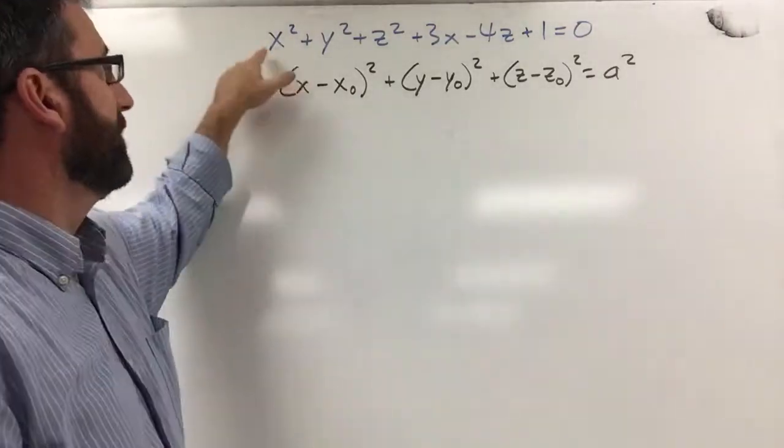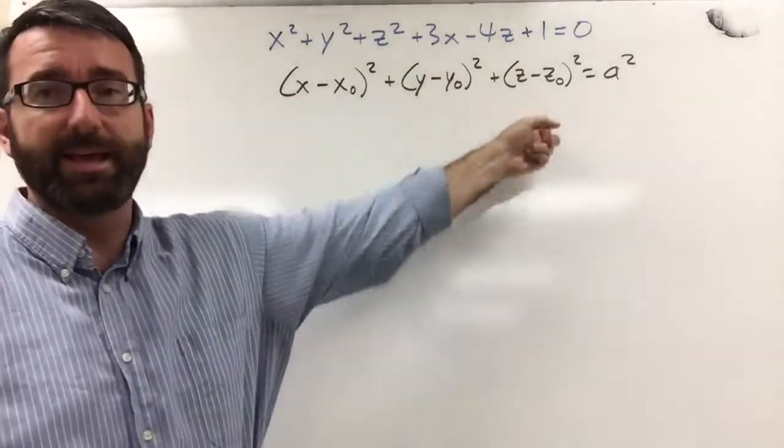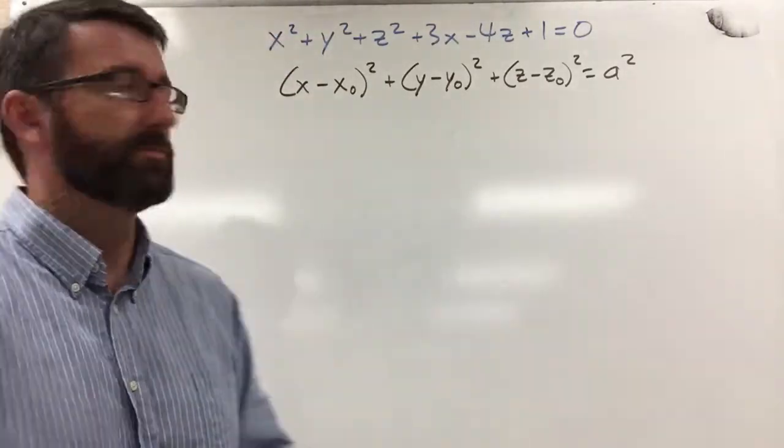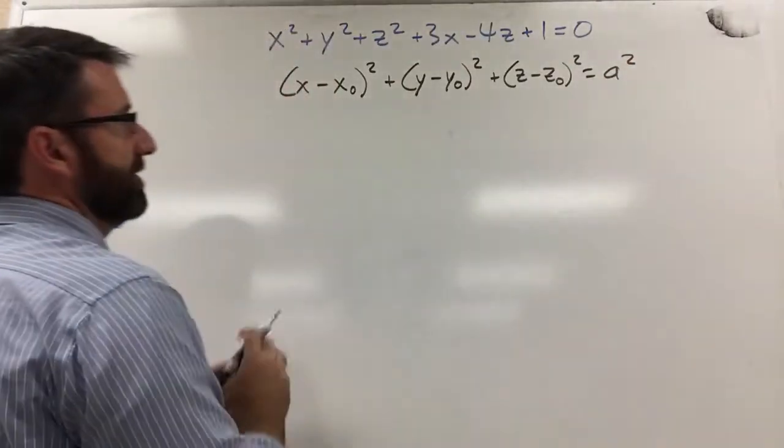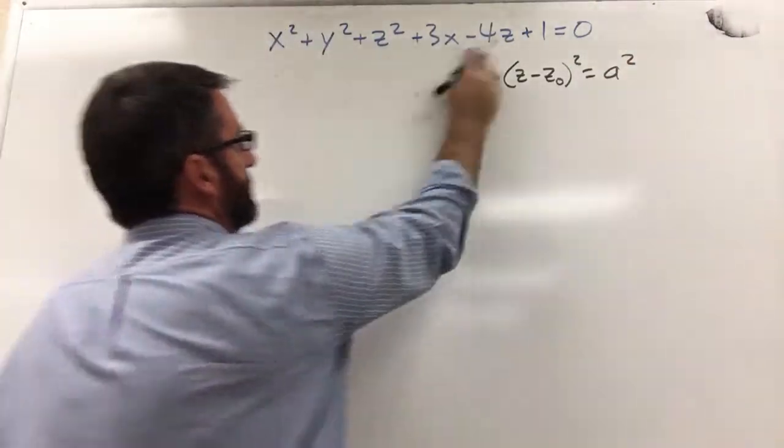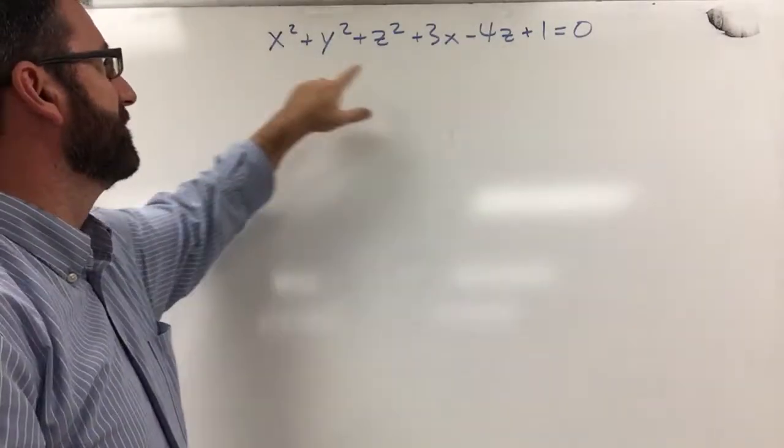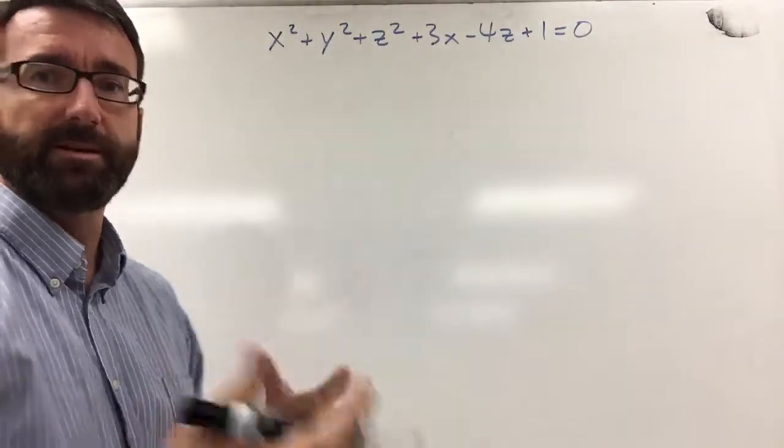In order to get this equation to look like this, we need to complete the square on our x, y, and z terms and get the constants all over to one side. So let's do that. Let's start by grouping our x terms, y terms, and z terms.